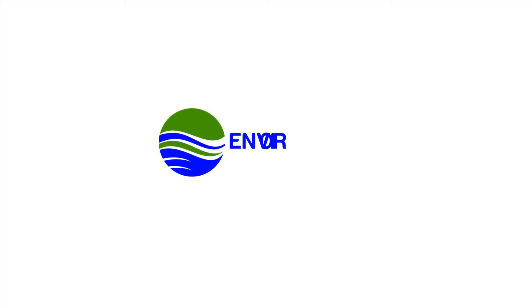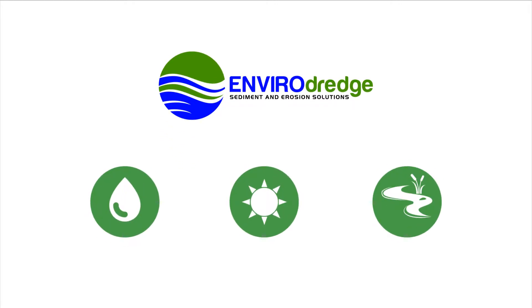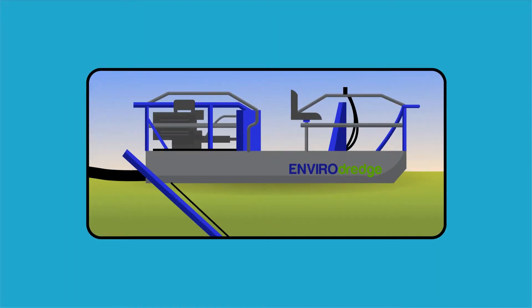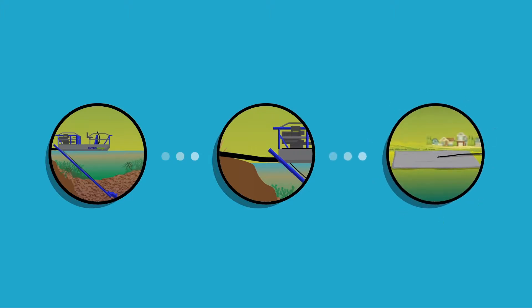The Envirodredge sediment removal process is an environmentally friendly approach to hydraulic dredging that uses high-pressure suction to vacuum and transport the wet sediment materials through a temporary pipeline to a predetermined location that is often hundreds of feet away.